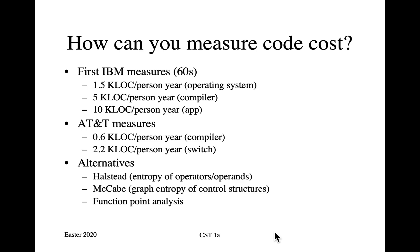For compilers, which are still tricky and require bright people who understand computer science, you might get 5,000 lines of code per person per year. For simple stuff like apps, you would get double that. AT&T, which had a monopoly on telephone service provision in the USA, got less productivity because telecom software tends to be even more complicated than the business software IBM was producing for customers in banking and retail.